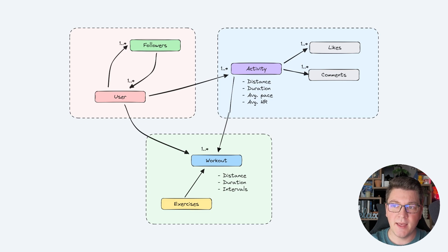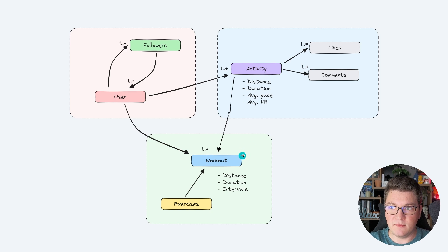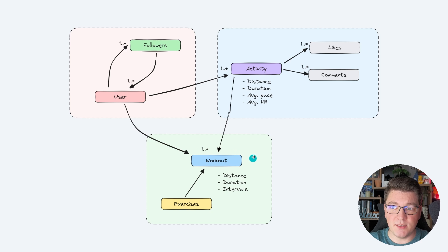Going back to the diagram, we have three distinct aggregates, each with a clear boundary encapsulating its objects. The references crossing aggregate boundaries point to specific objects — the user, the activity, and the workout — which are the aggregate roots. The workout entity is the aggregate root for its aggregate, the user entity for its aggregate, and the activity entity for its aggregate.